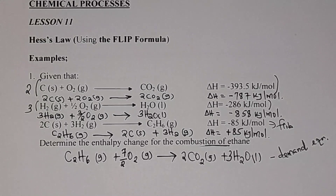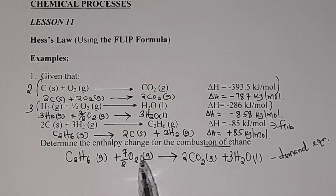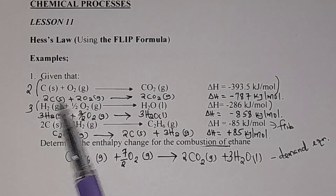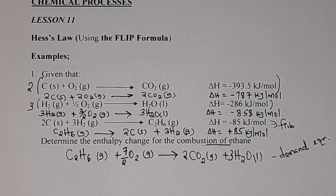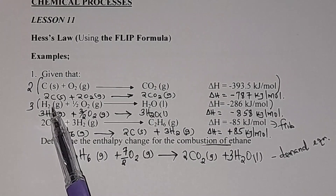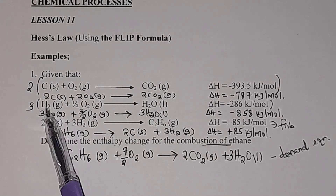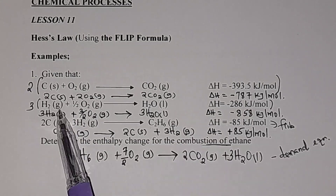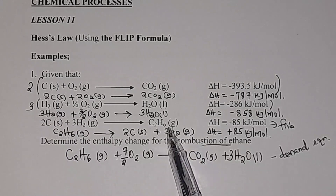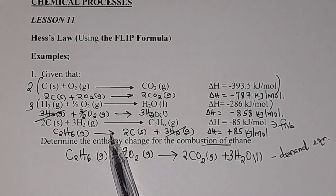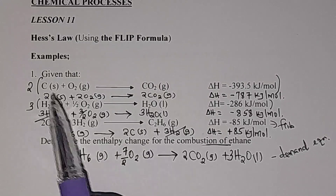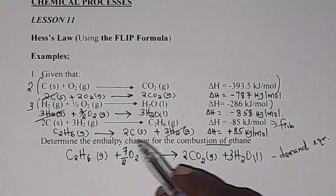The next step is cancellation or elimination. We check: whatever appears in the given equations — if it appears on the reactant side in one equation and on the product side in another, we cancel it out. We have 3H₂ (which is 6 hydrogen) on the product side of the flipped ethane equation, and 3H₂ on the reactant side of the hydrogen equation — so these cancel. We also have 2 carbon on the product side of the flipped ethane equation, and 2 carbon on the reactant side of the carbon equation — so these cancel too.